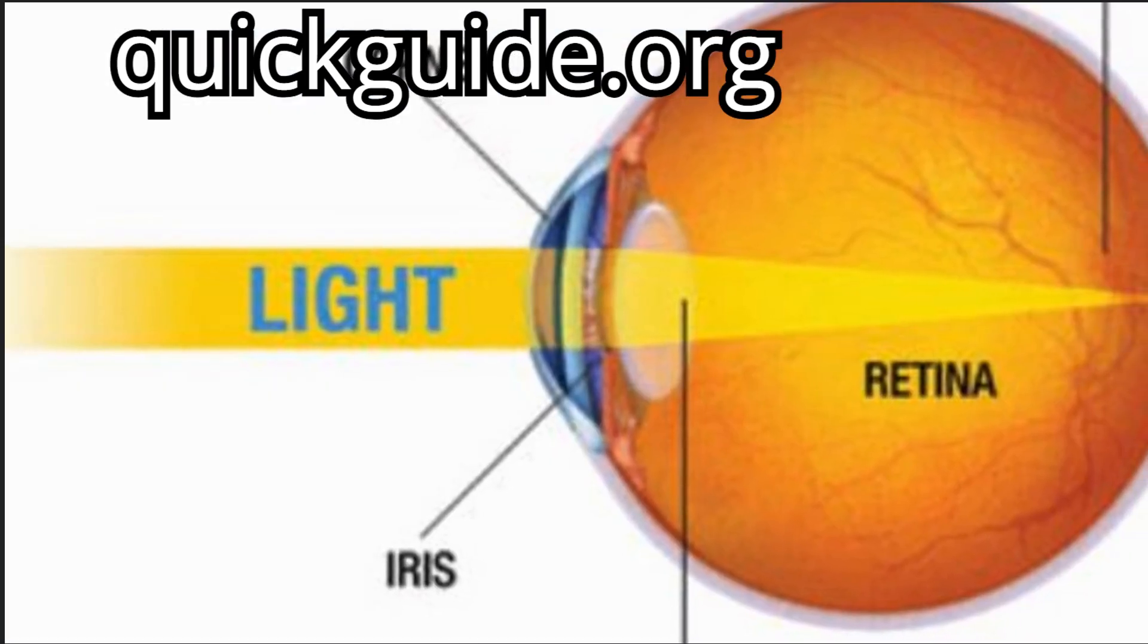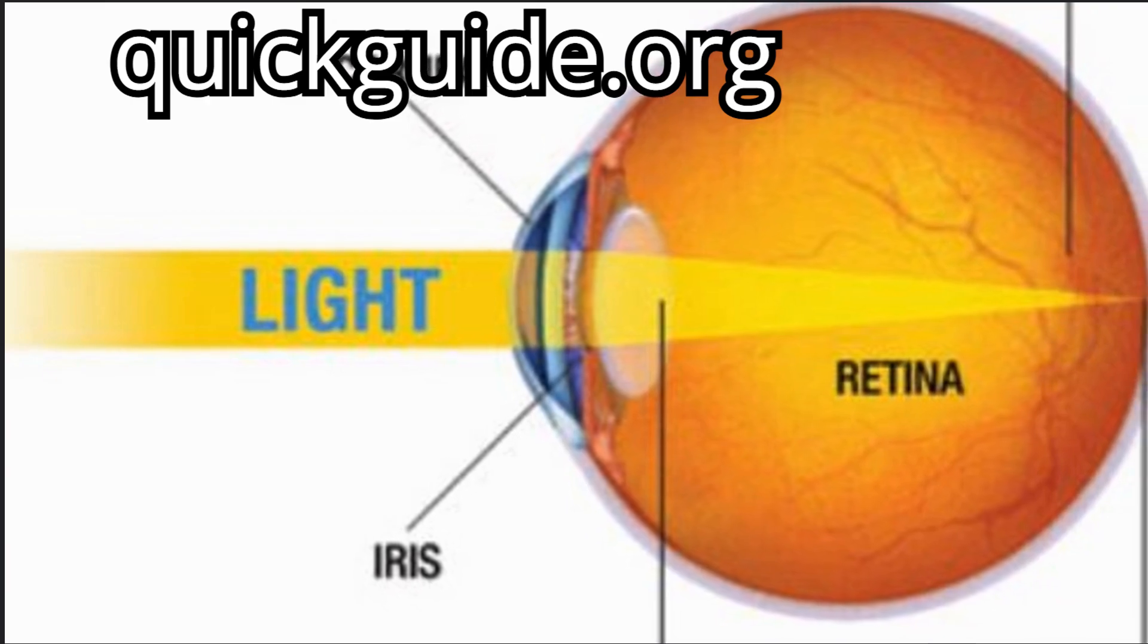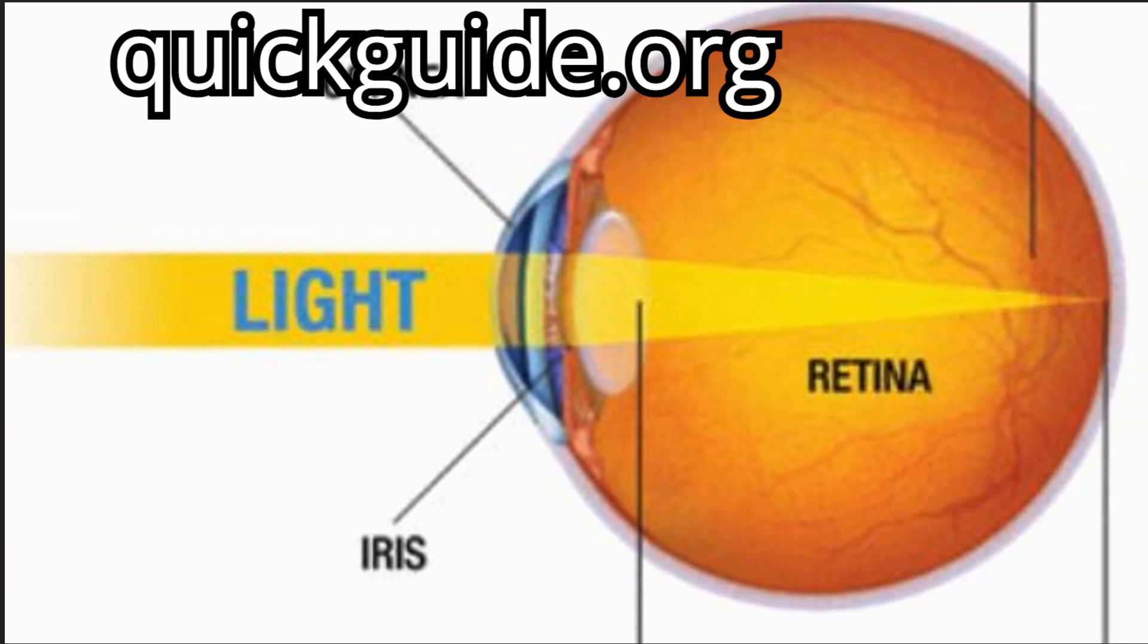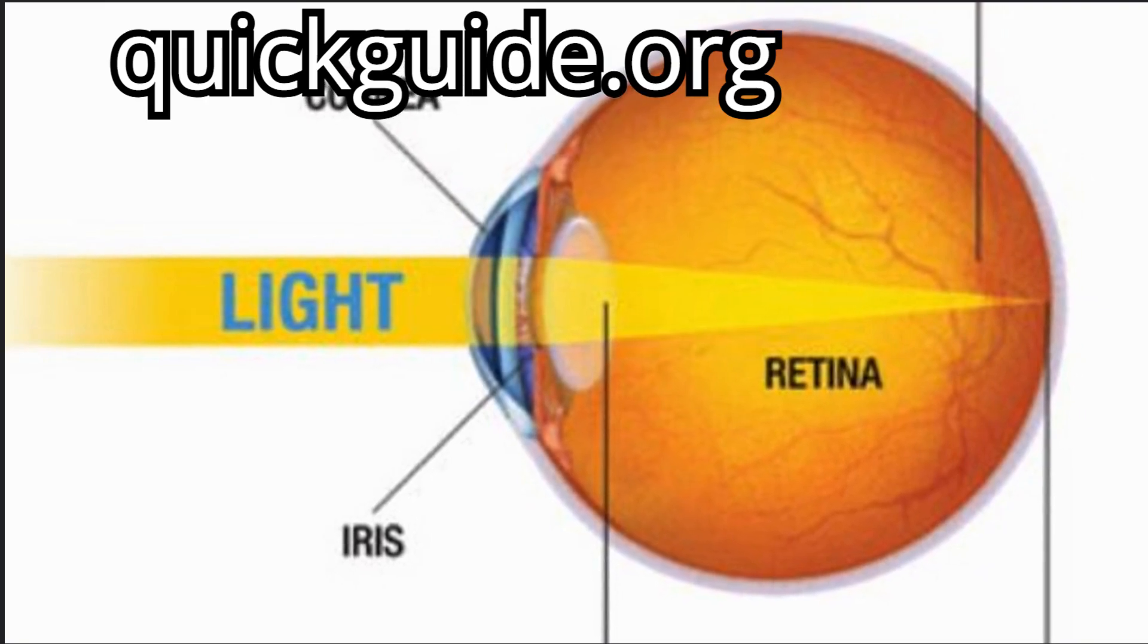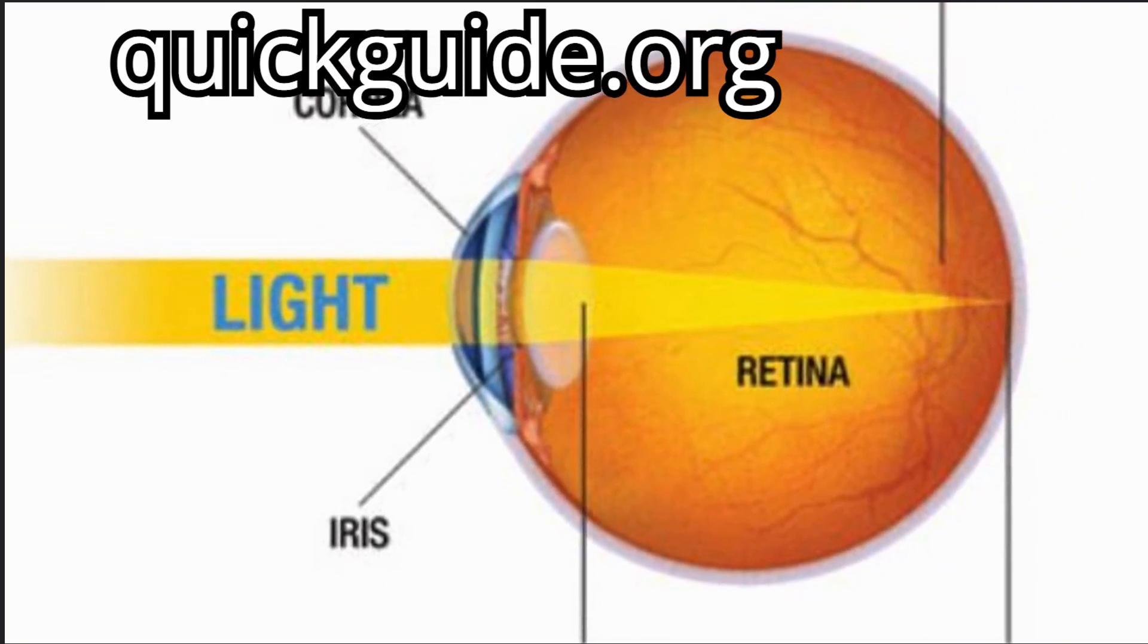In this case, the light is traveling through the air and cornea whose refractive indices are 1.0 and 1.376 respectively.